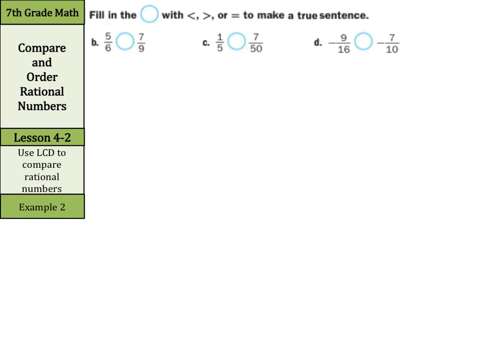Fill in the circle with less than, greater than, or equals to make a true sentence. One method we can use to compare these two numbers is to find common denominators. If we rewrite our 5 sixths and our 7 ninths, we can get both those to thirty-sixths. 6 times 6 is 36, so 5 times 6 is 30. 9 times 4 is 36, so 7 times 4 is 28. And when I go to compare, 30 is greater than 28. So 5 sixths is greater than 7 ninths.